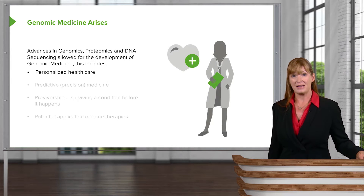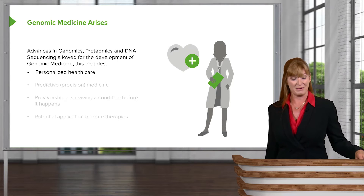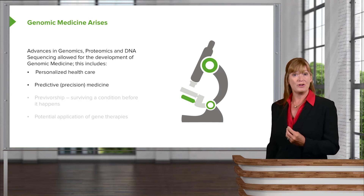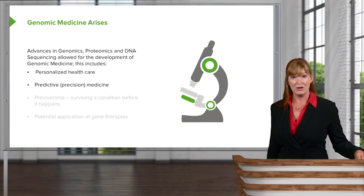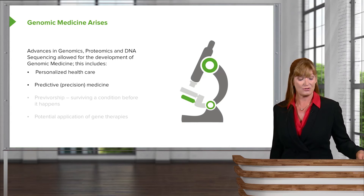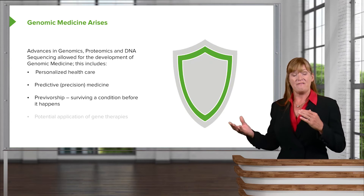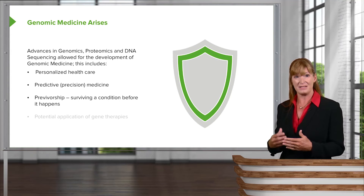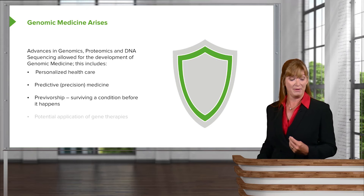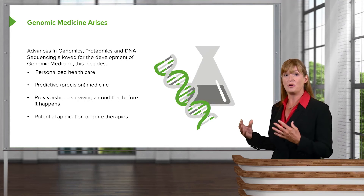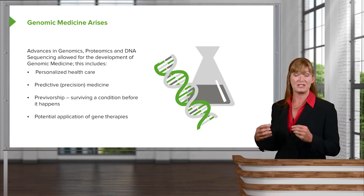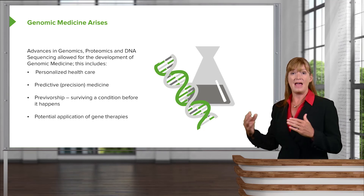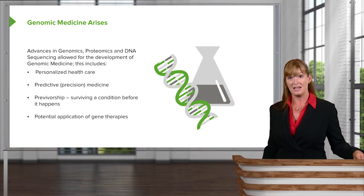Personalized healthcare means we can do genetic testing and figure out what people's predispositions might be. We're able to predict or add more precision to our treatment of individuals because as we learn more and more about the genome, we're able to have more information to treat. And then we have the concept of previvorship — if an individual has chosen to be tested genetically for conditions, we can possibly intervene before that condition even shows up. So we have the potential application of gene therapies in research as we discover more about the genome. The advent of genomics and proteomics gives us many more tools to utilize in medical genetics.